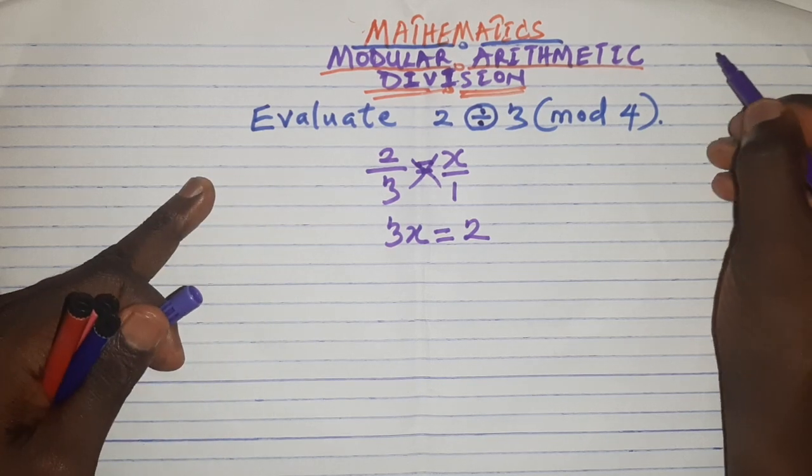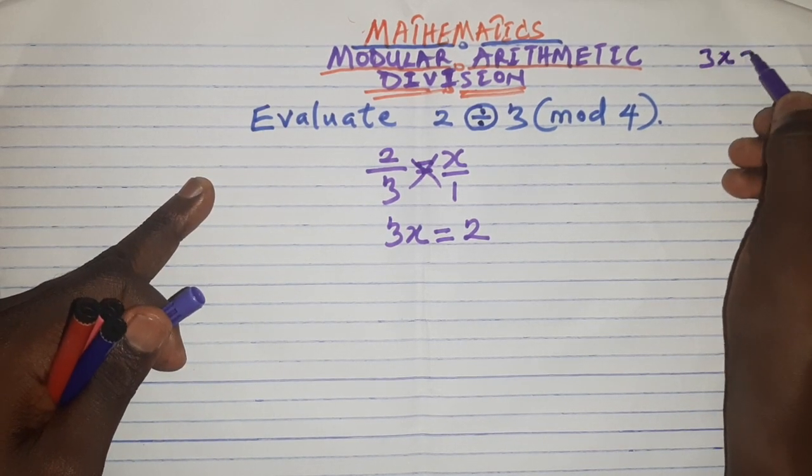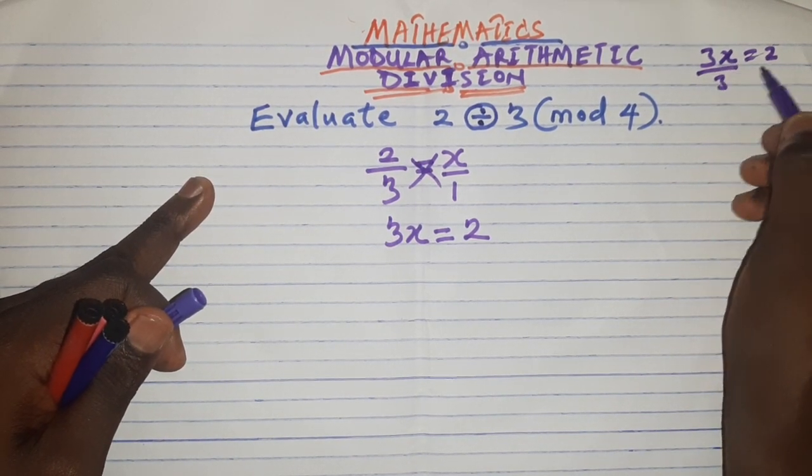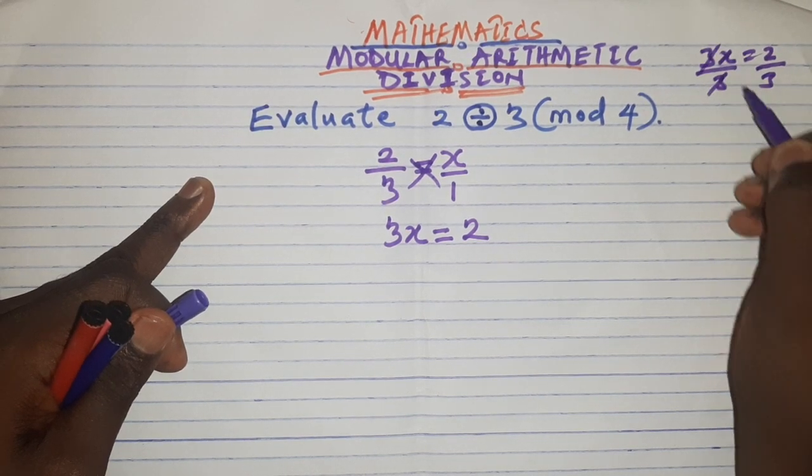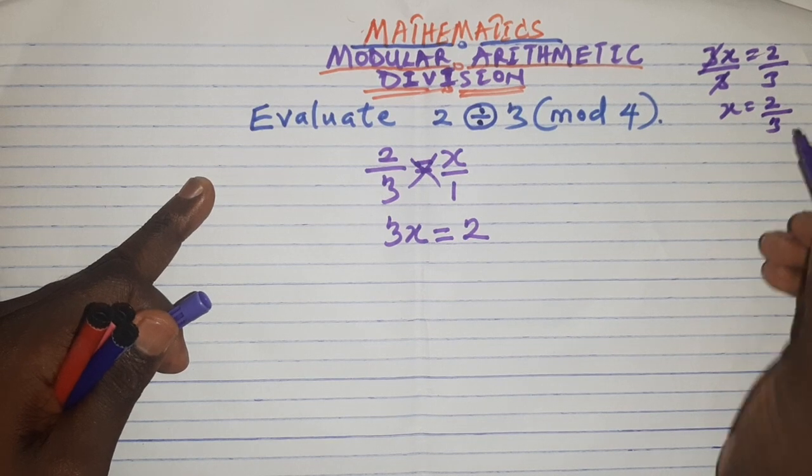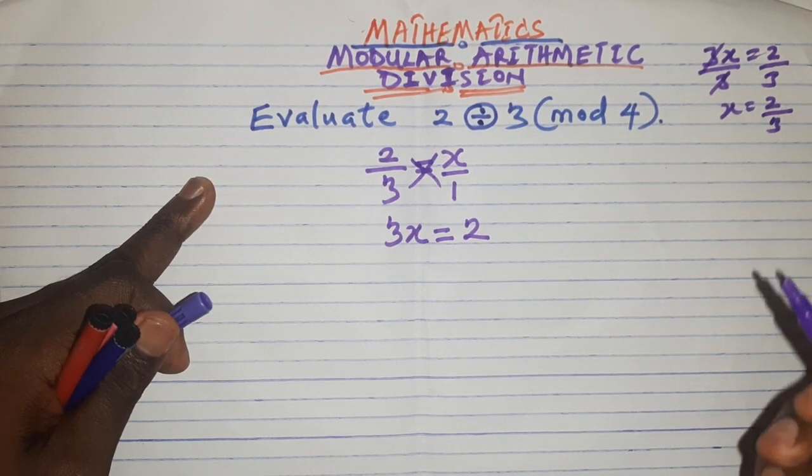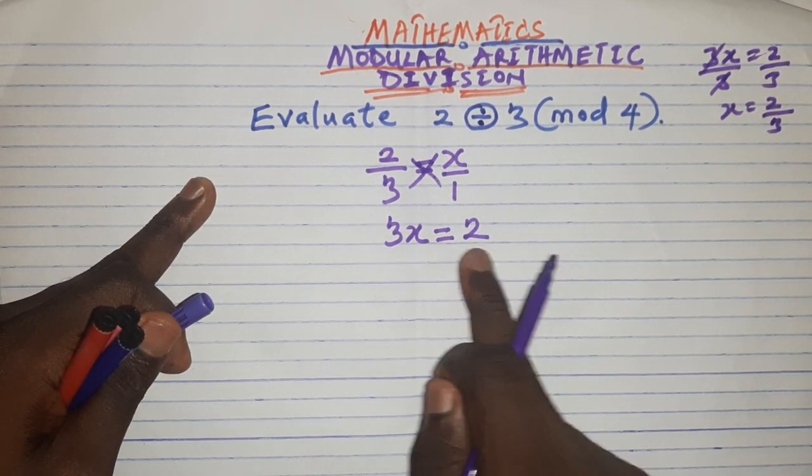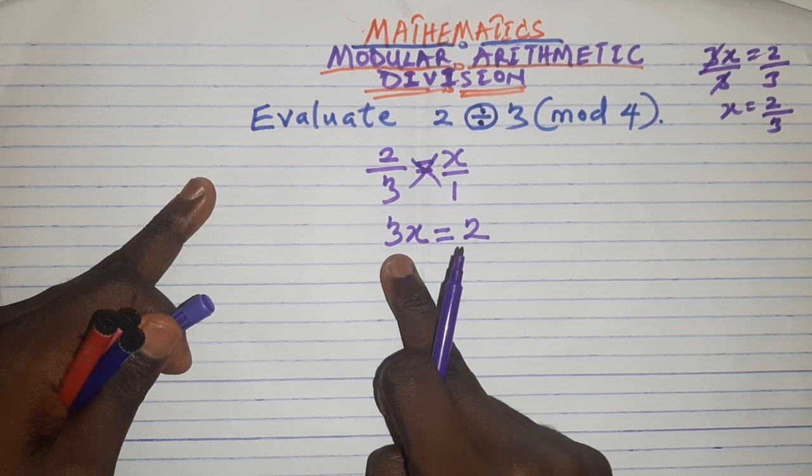For example, let me do it on this part of the paper. So 3x equals 2 divided by 3, 3 cancels 3, then you have x equals 2 over 3 which is not valid in this case. We know 3 cannot divide 2.